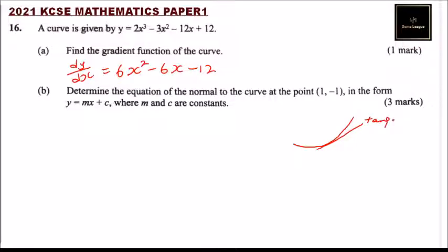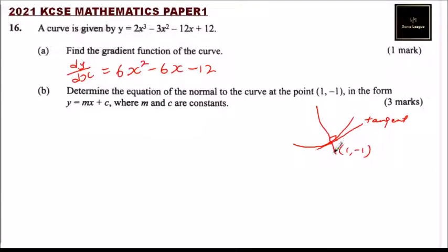This is the tangent, and we assume (1, -1) is the point, just for demonstration. The normal is a line perpendicular to the tangent at this point — it makes an angle of 90°. When two lines make an angle of 90°, the product of their gradients is -1.